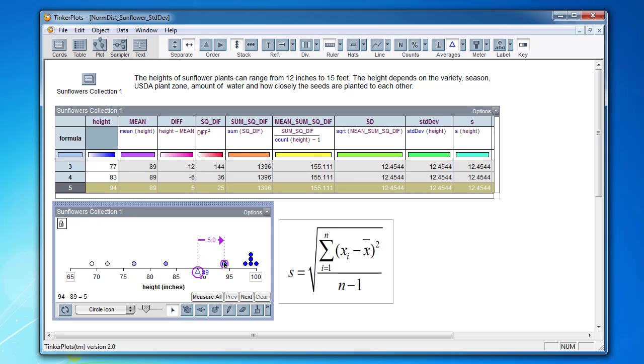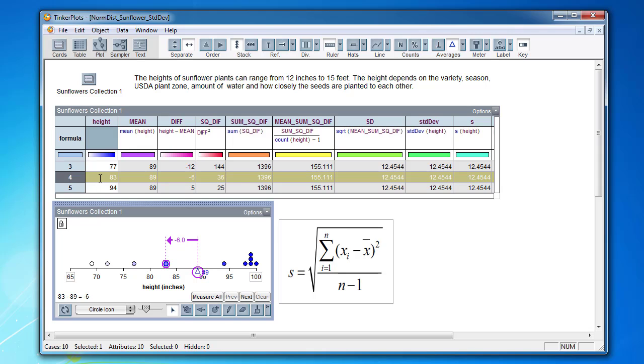And if we go to the other side and we snap down to this particular plant, we see that we have 83 minus 89, which gives us a negative 6. So these numbers should be matching in this column. Sometimes that's really the only place where a student will make a mistake, is that they will flip the order of those two.